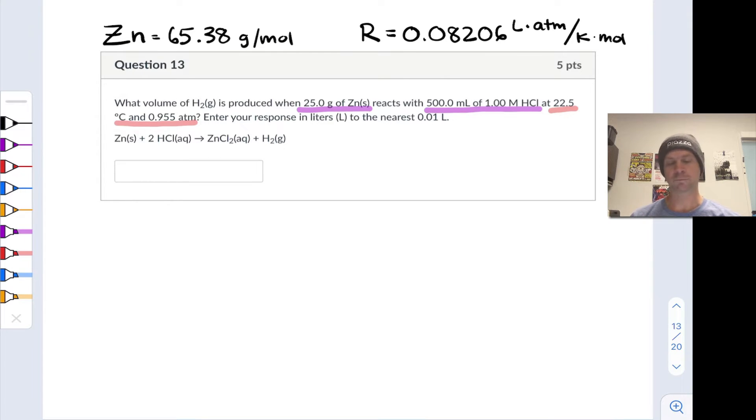To get started with this, though, the first thing we need to figure out is what is the limiting reactant. And in order to do that, we need the moles of zinc and the moles of hydrochloric acid. And the moles of zinc can be found just by dividing 25 grams by the molar mass of zinc given on the slide. And this is the value we get, about 0.4 moles of zinc.